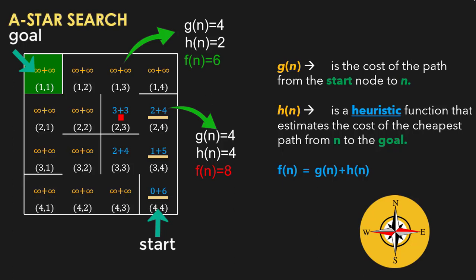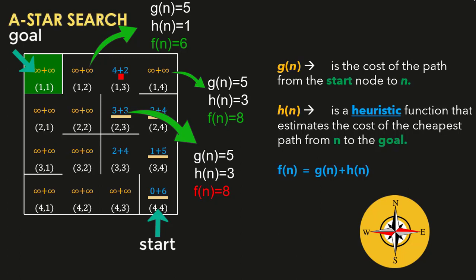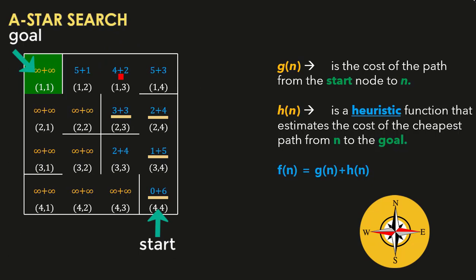We repeat the process from cell 2,3. Its two neighbors are evaluated; cell 2,4 gets a higher cost so it's ignored, and cell 1,3 is updated. Again we search for the minimum cost unexplored cell. Two cells share the minimum, but we choose cell 1,3 because it has a lower heuristic cost. From cell 1,3, three neighbor costs are computed and two are updated. This is the beauty of A star — even when we move to cell 3,3 which seems farther from the goal, its overall cost is the lowest, meaning there might be a path of minimum total cost through it, and the algorithm does not ignore that possibility.